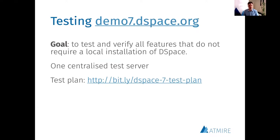A significant amount of testing will be carried out on a central testing server that's already accessible today: demo7.dspace.org. This means that all you need to participate is a web browser. You don't need to be a developer. You don't even need experience as a DSpace administrator. All community members work together on a central Google spreadsheet — the DSpace 7 Test Plan — to make it transparent throughout the weeks of the Testathon what's already been tested by whom.